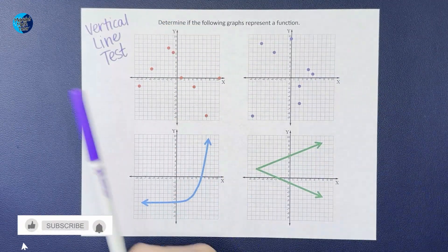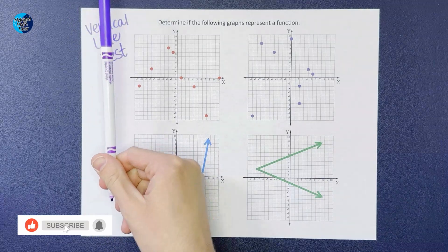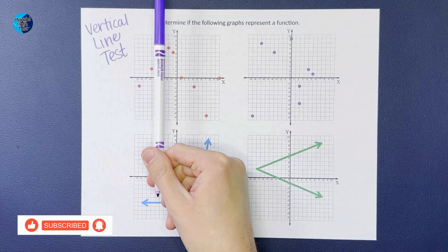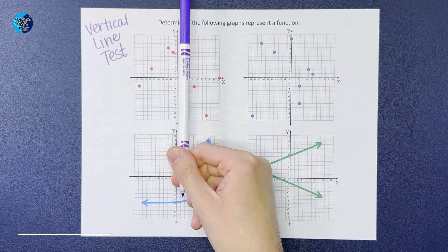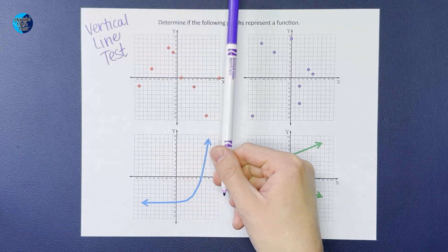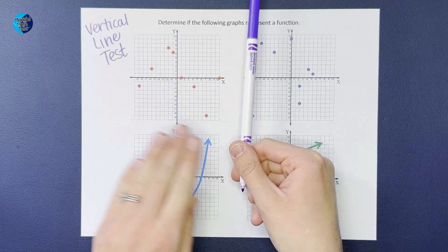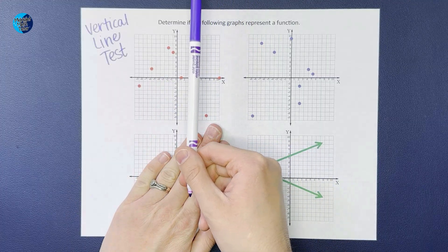All you're doing is going from one end of the graph to the other and making sure that your vertical line never crosses two points. So you'll see I'm doing this one up here - it never crosses two points at the same time with that vertical line.